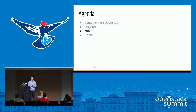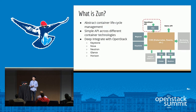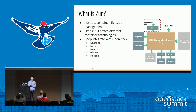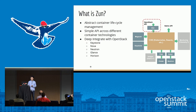Now I'll talk about the new project, Zun. There are two ways to consume services from COEs: the first is using the native API provided by the COE, and the second is using an OpenStack API provided by Zun. Zun provides an API that abstracts container lifecycle management. It provides a simple, generic API that works across all container technologies. In the backend it has deep integration between OpenStack and containers, integrating with several OpenStack services such as Keystone, Nova, Neutron, and others.